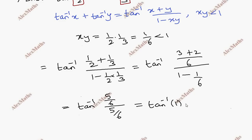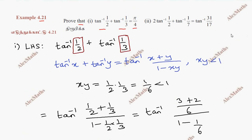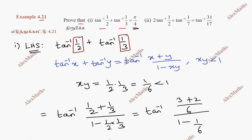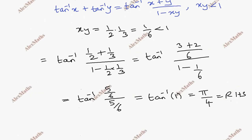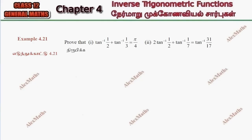Tan inverse 1 equals pi by 4, since tan of pi by 4 is 1. This equals the RHS. So LHS equals pi by 4 equals RHS. Subdivision 1 is proved.